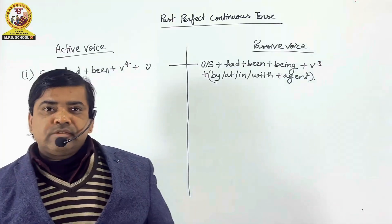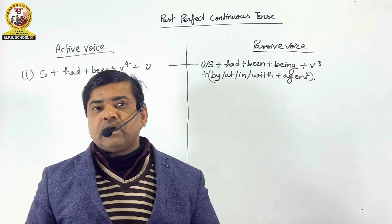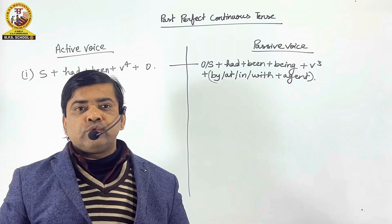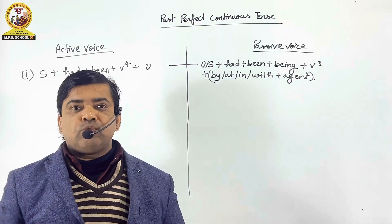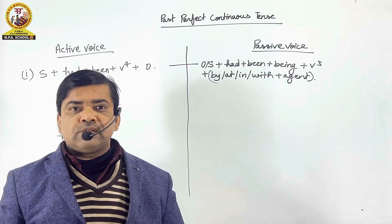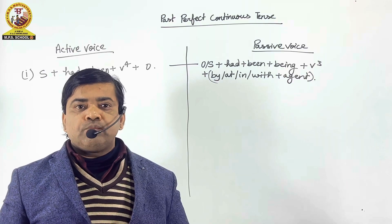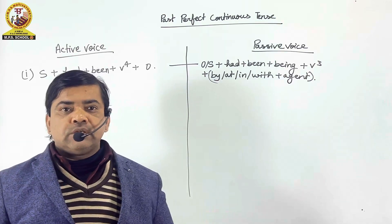In this session, I am going to teach you the active and passive voice of past perfect continuous tense. In active voice of past perfect continuous tense, we use the structure formula: subject + had + been + V4 + object.